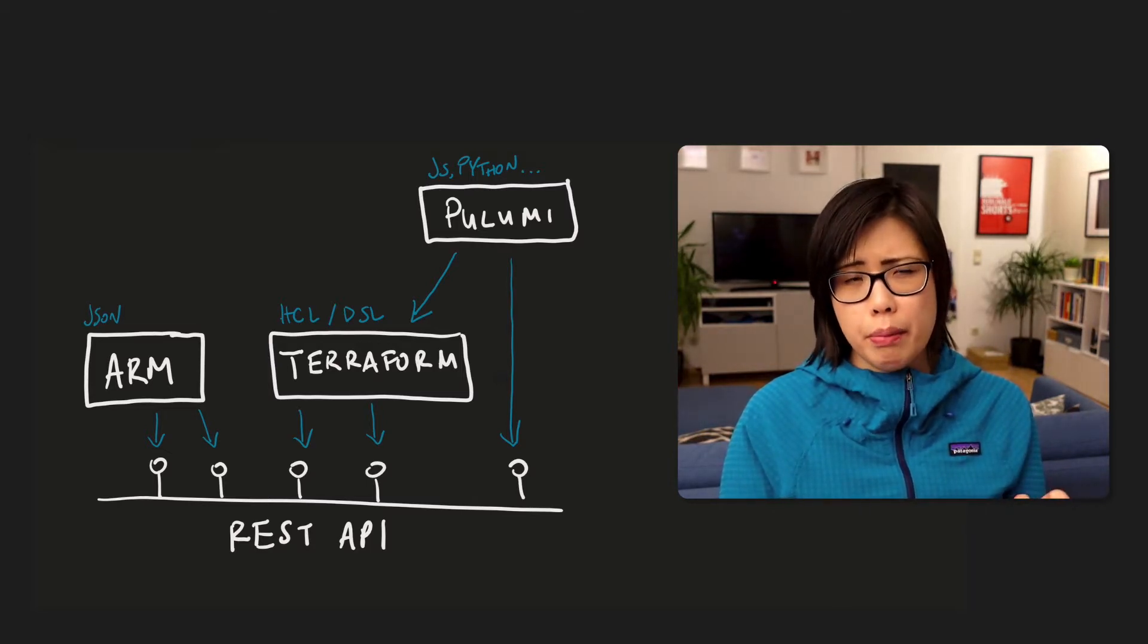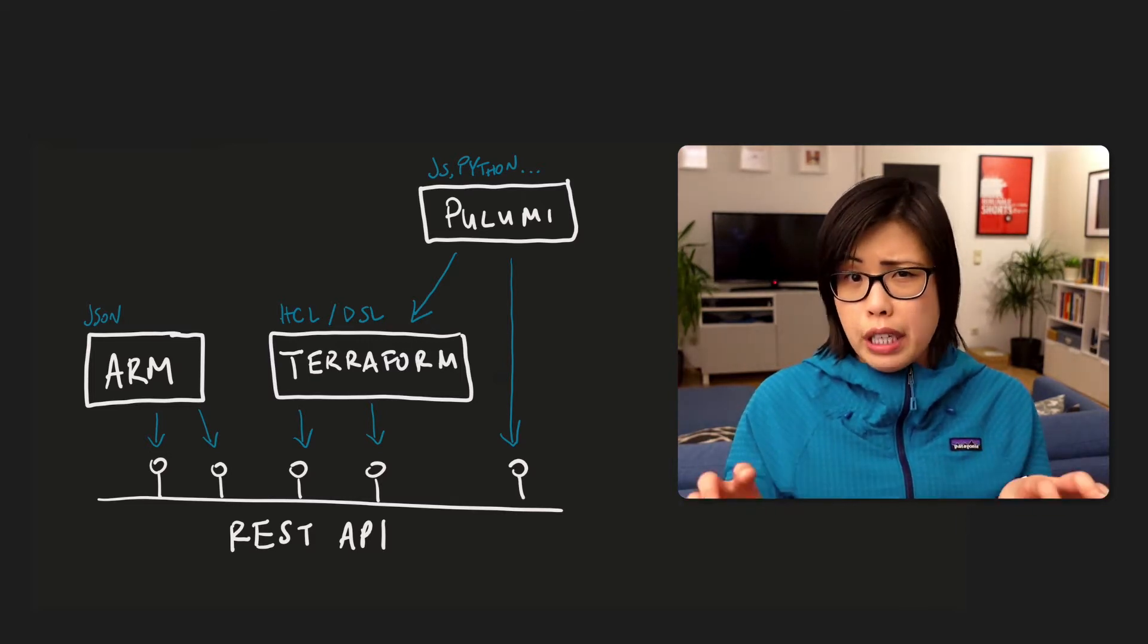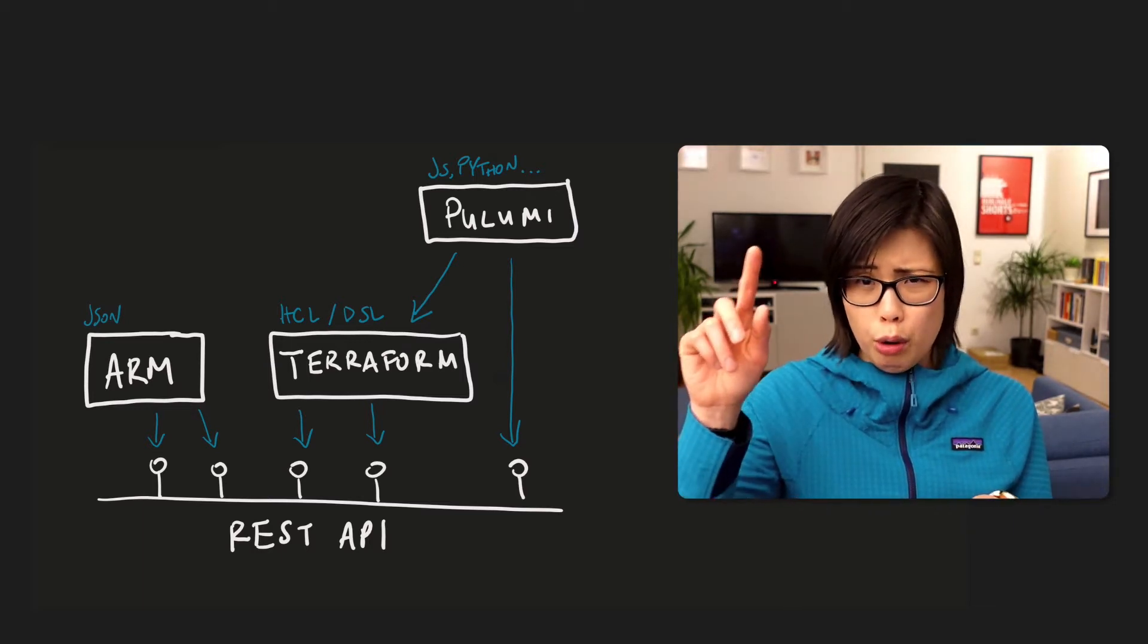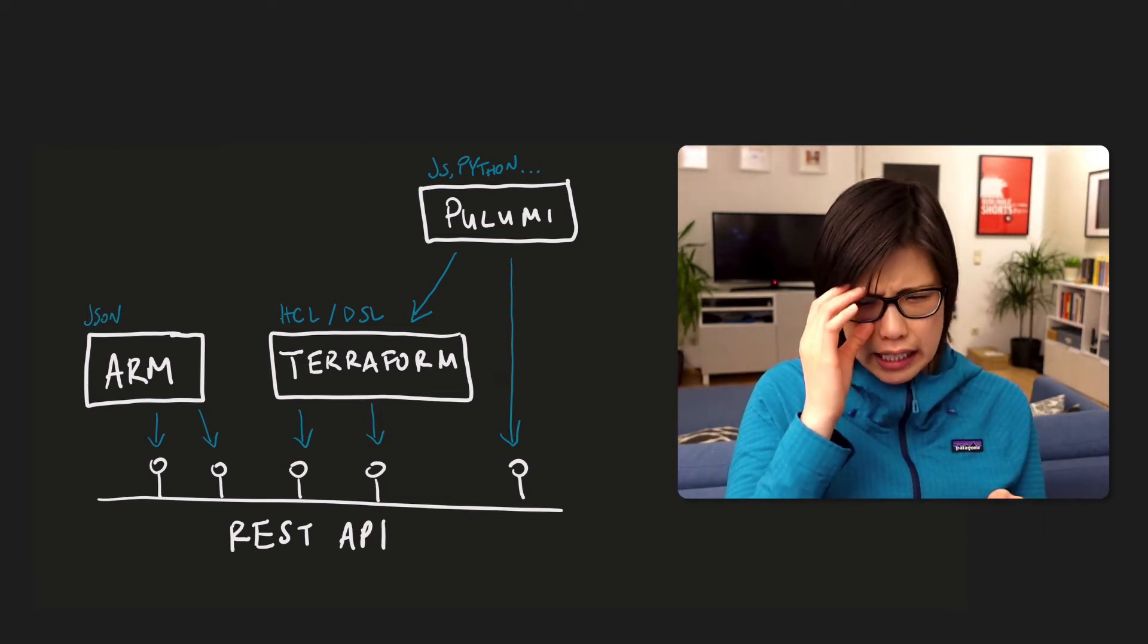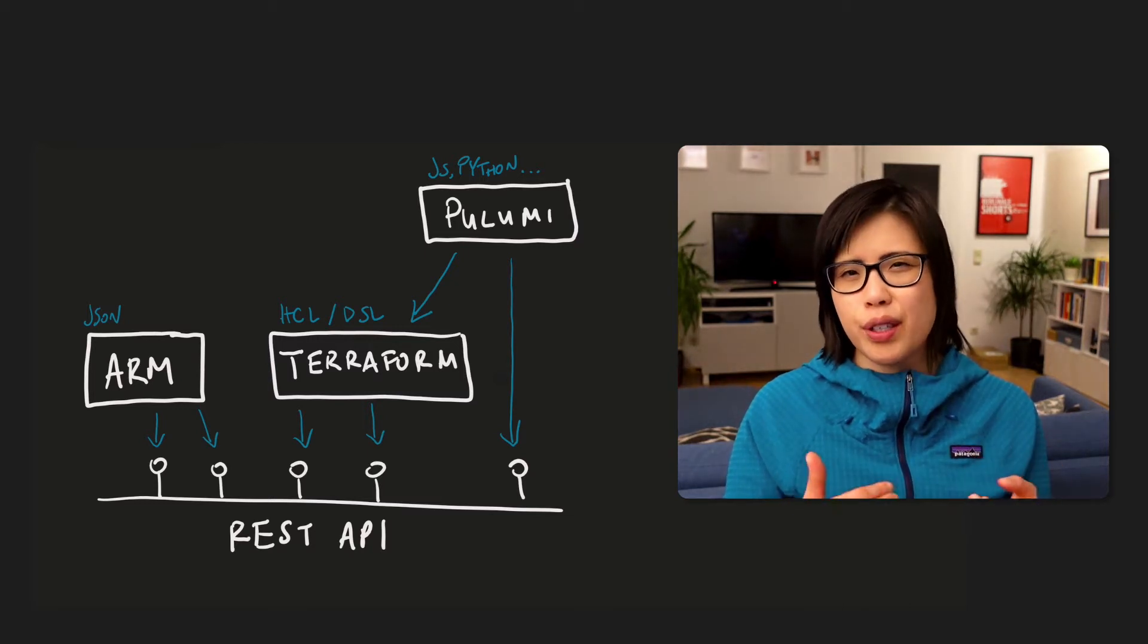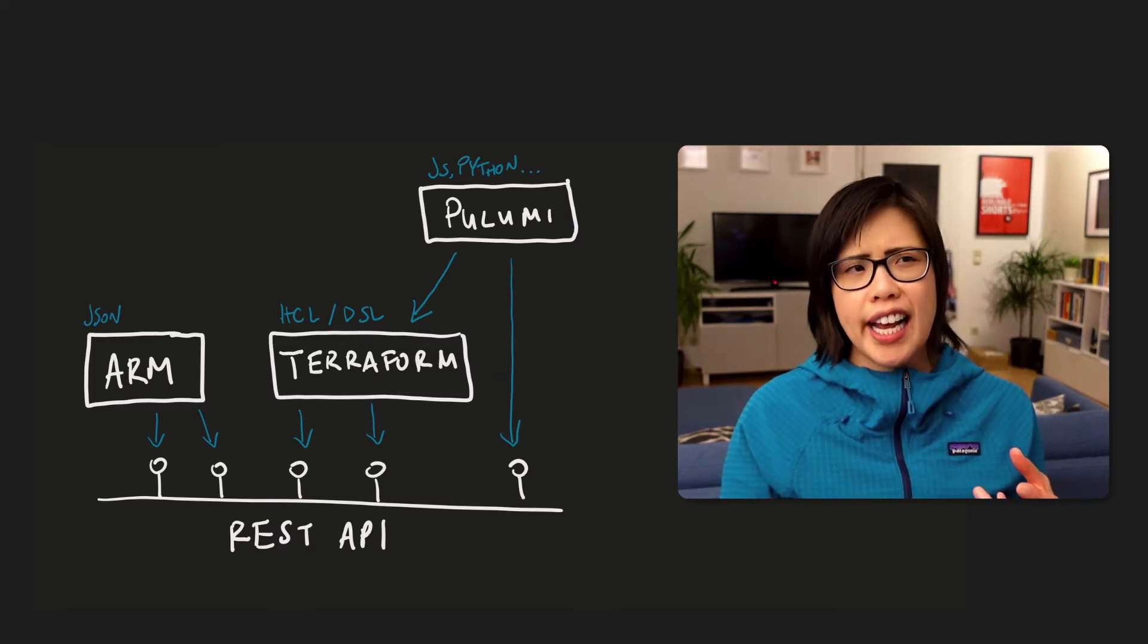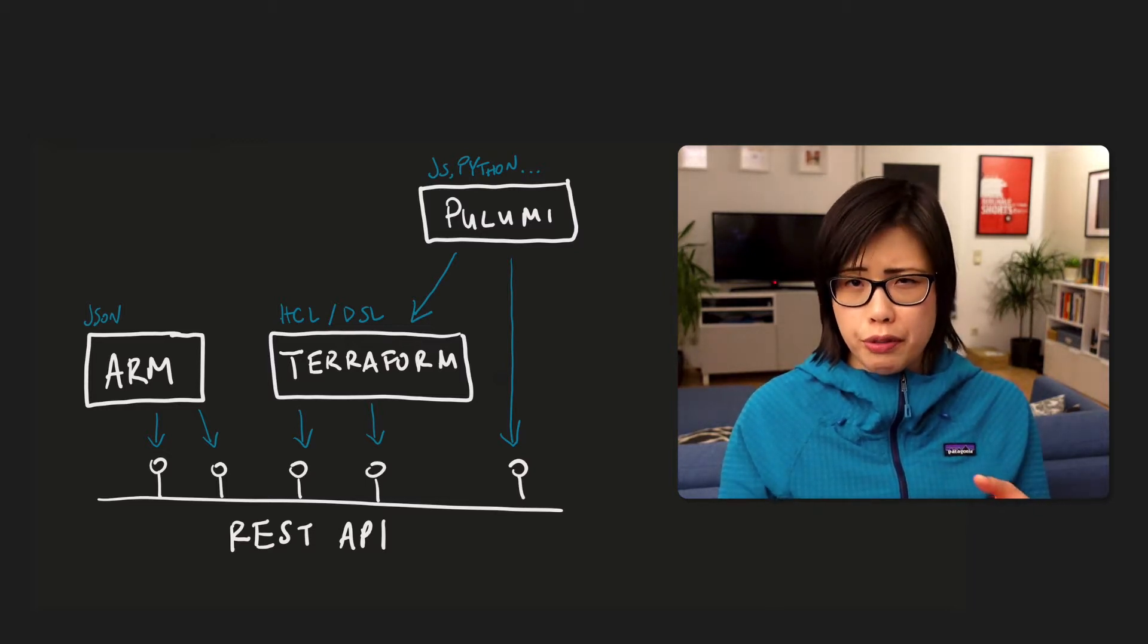There are some things in Pulumi which will talk directly to a cloud provider's REST API. So all three are talking to the same Azure resource manager API under the hood in some form or other, either directly or via Terraform. And you kind of just pick what flavor of infrastructure as code do you like? What are you most comfortable with? Ultimately, everything is just kind of an abstraction and you pick the one that's most comfortable for you.